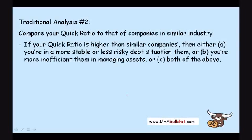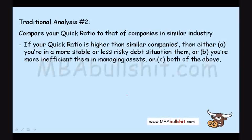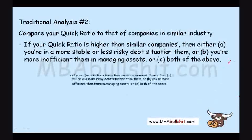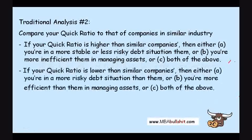The second form of traditional analysis is to compare the quick ratio to companies in a similar industry. If the quick ratio is higher than similar companies, then either it's in a more stable or less risky debt situation, or it's more inefficient in managing assets — meaning it's using too many assets just to generate profit. From the owner's point of view, it's better to earn the same profit using fewer assets. If the quick ratio is lower than similar companies, then either it's in a more risky debt situation or it's more efficient — using less assets to generate the same profit.